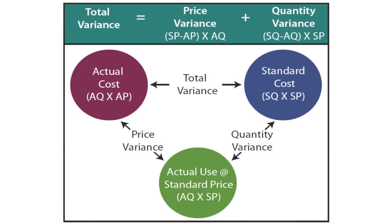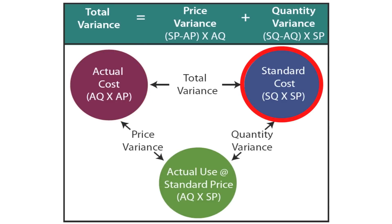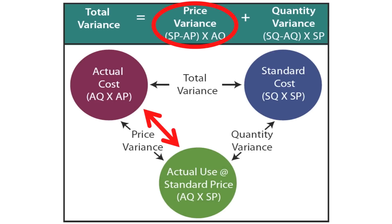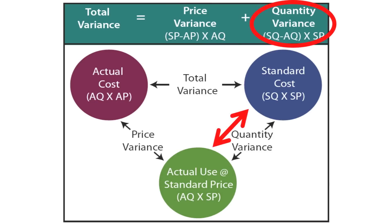This next illustration will further demonstrate this point. The actual cost is the actual quantity times the actual price. The standard cost is the standard quantity times the standard price. The difference between those two is the total materials variance, but we can further divide this into the price variance and quantity variance. The price variance: standard price minus actual price times actual quantity. The quantity variance compares standard quantity minus actual quantity times the standard price.